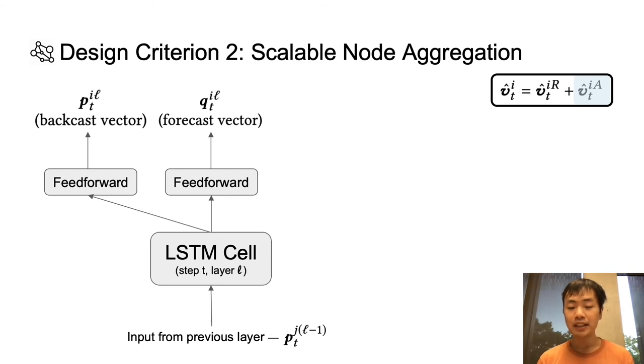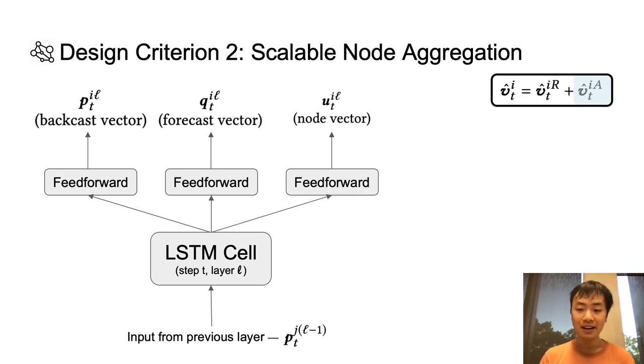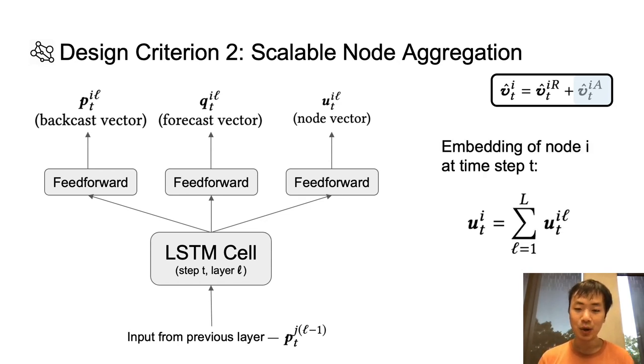And finally, in order to aggregate information from different nodes in the graph, we need a way to have an embedding for each node at each time step. This embedding should be able to capture information about the whole time series up until a particular time step. And to do this, we add another fork from the LSTM cell to generate what we call the node vector. And the embedding of node i at time step t is simply the sum of the node vectors across all layers.